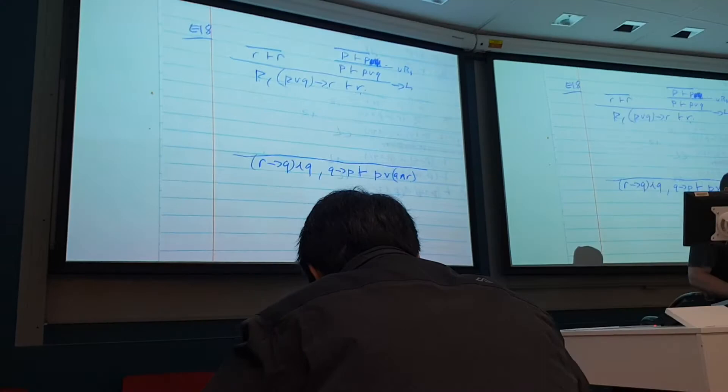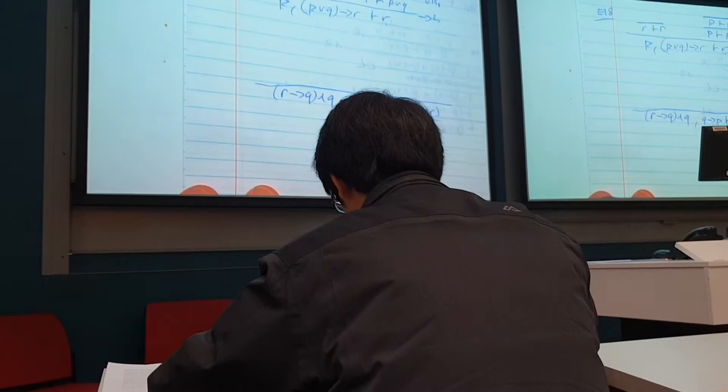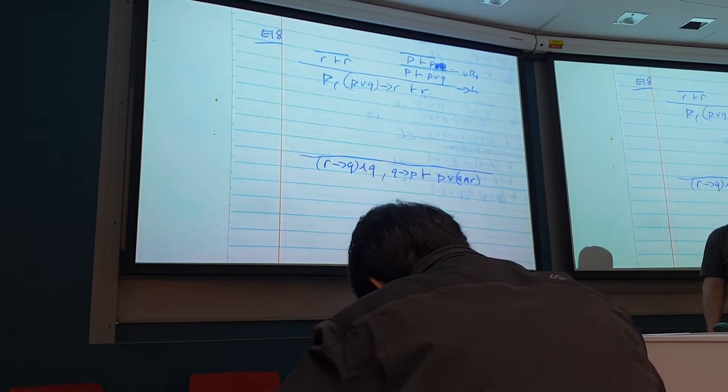Now, we've got a problem. Pretty good choice. We can break down this conjunct on the left. We can break down this arrow on the left. We can break down this disjunction on the right. Yeah, any of them are okay.